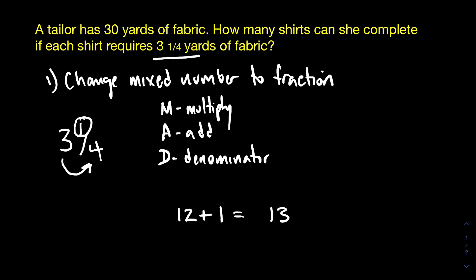And then finally, the D of denominator just means that you're going to keep the same denominator from the original mixed number. So in this case, you can see that the denominator is four. Alright, so thirteen over four is the same as three and one-fourth.